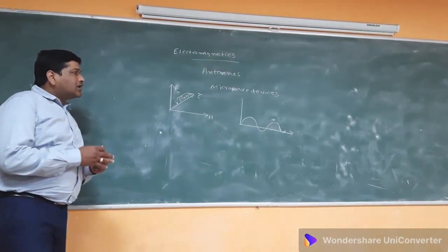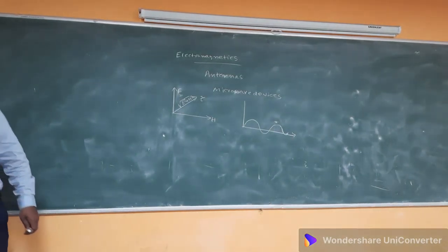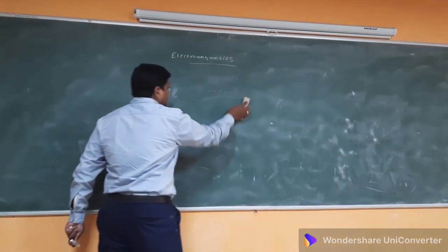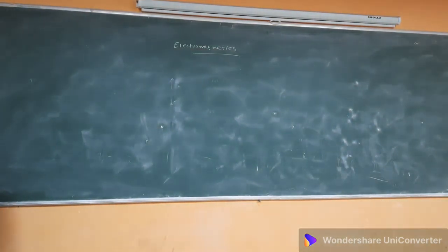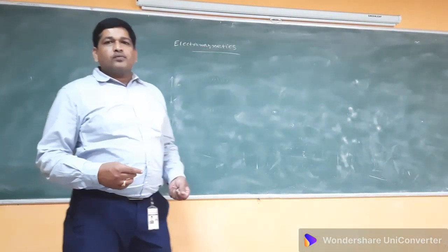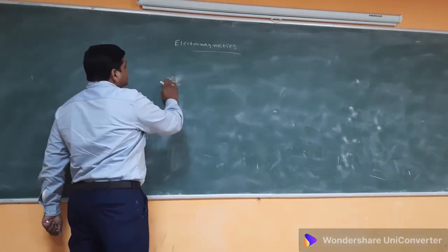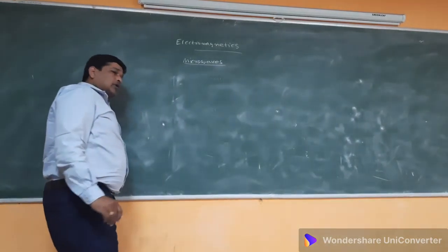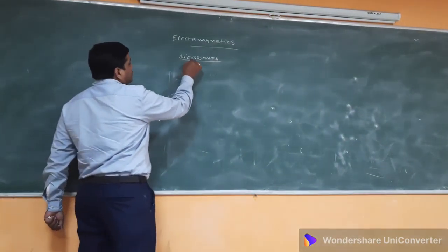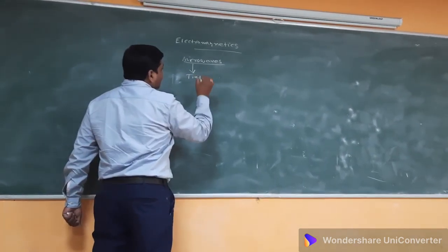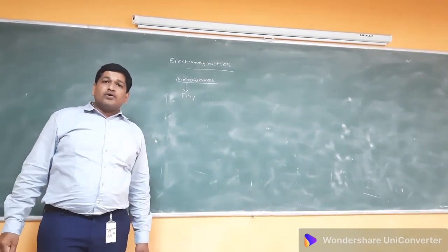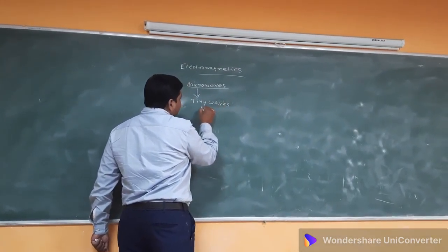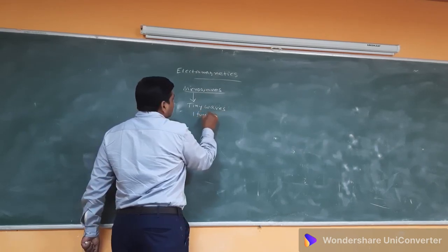Now coming to microwaves. In an electromagnetic signal, microwaves have a very important role. The antenna should be connected to some guided medium, which can be either a transmission line or a waveguide structure. Regarding microwaves: 'micro' refers to tininess, so these are called tiny waves. Microwaves have one foot wavelength — that is approximately 26.3 cm.